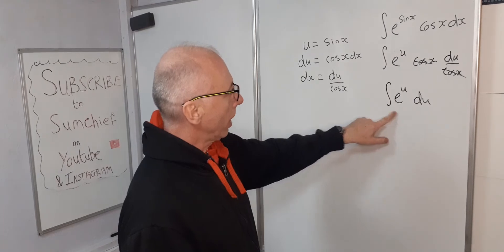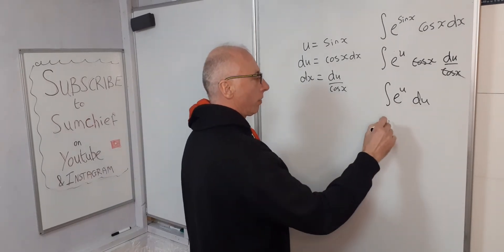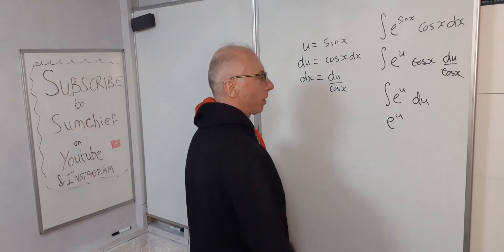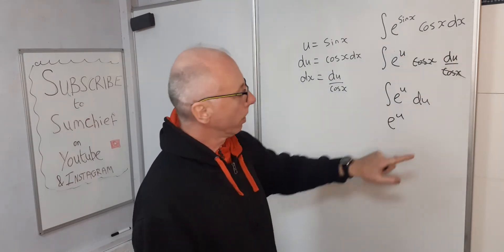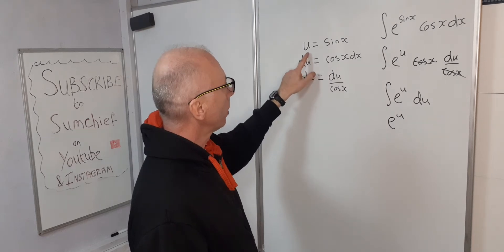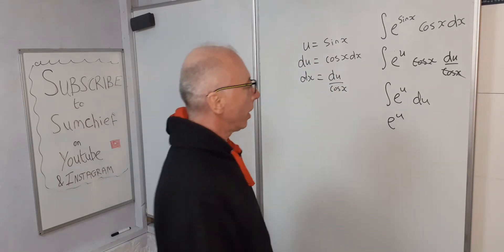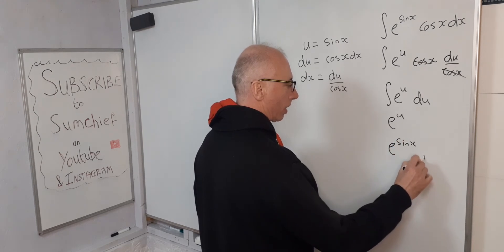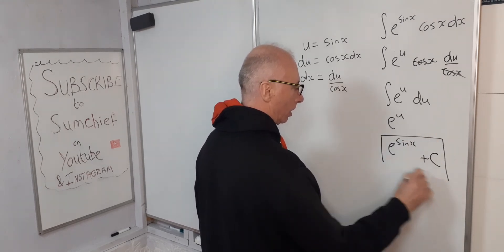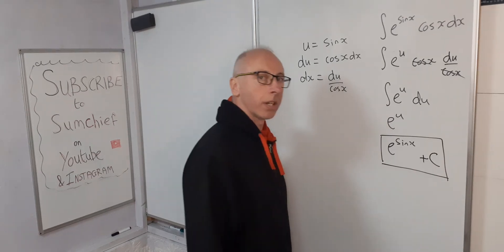Which we can integrate straight away. So the integral of e to the u is just e to the u. Okay, now the original question was in the x world. So we need to now go back to the x world. u equals sine of x, so e to the sine of x plus c. That's your answer.